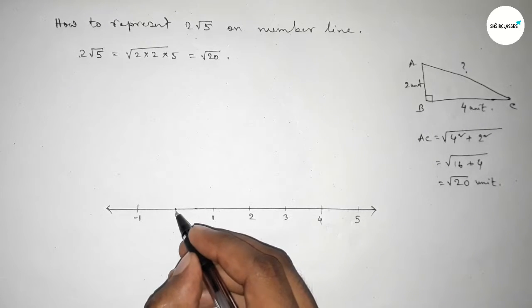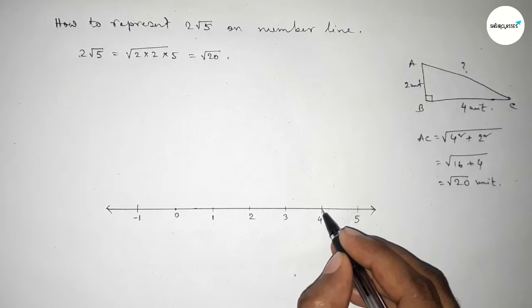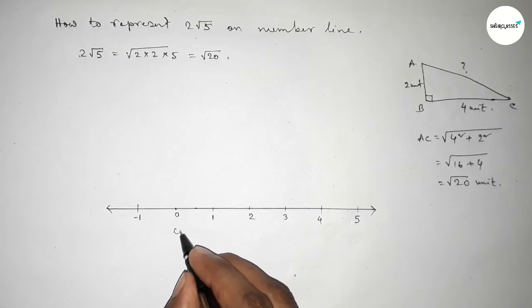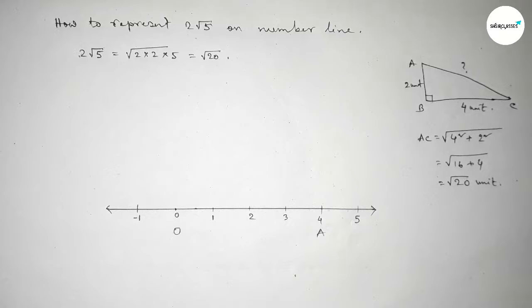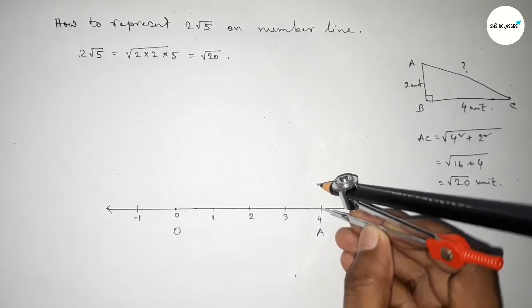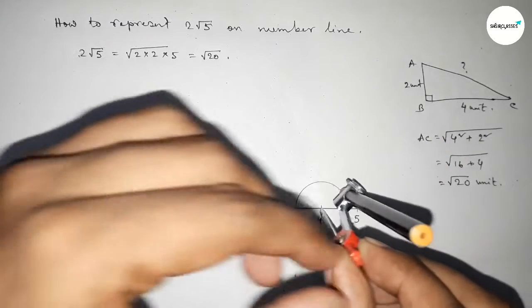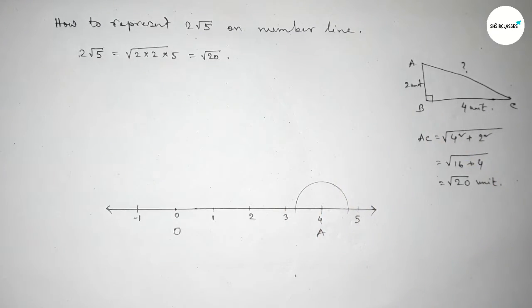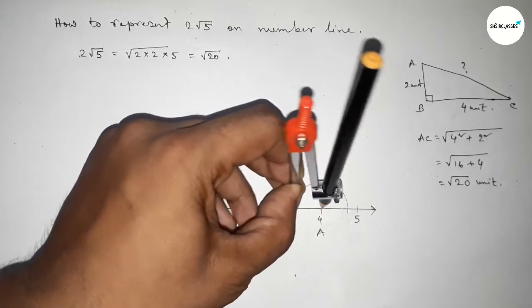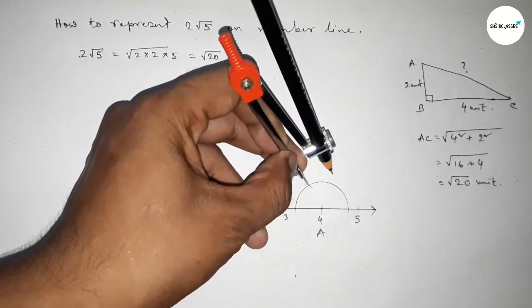Applying this concept here between 0 to 4. Taking here point O and here A. First we have to draw here a 90 degree angle on the point A. First drawing here an arc by this way, and putting the compass here with same length and cut here.